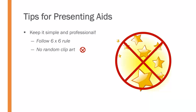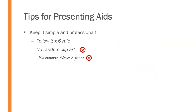No random clip art — it doesn't really add anything. If you have an image that's going to add something, great, use it. But if not, don't use random clip art. No more than two fonts per slide — one for the title and one for the text. Having a ton of different fonts makes it much harder to read. No more than four colors total in the slideshow — not within different words on the screen, just no more than four colors used at all.